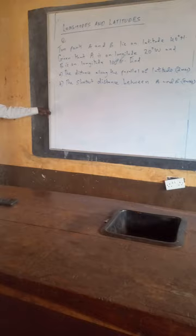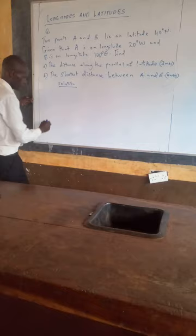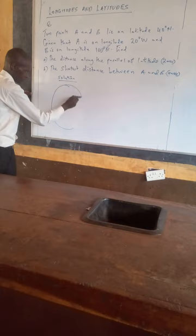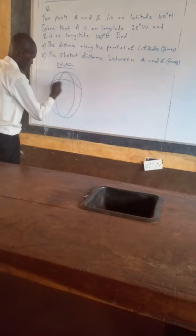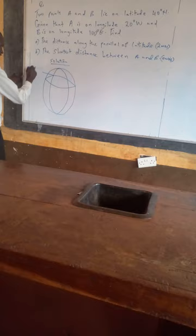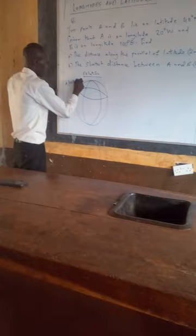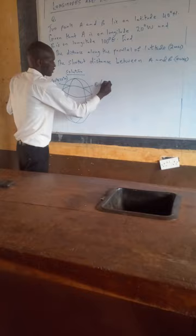To solve this, we shall draw a globe. On the globe we mark the longitudes and latitudes. Point A is at 40 degrees north and 20 degrees west, and point B is at 40 degrees north and 100 degrees east.